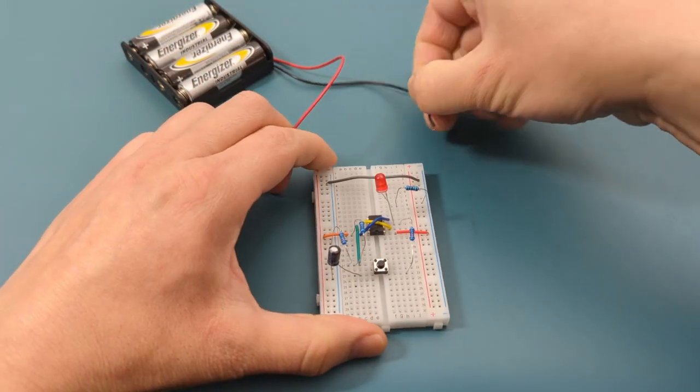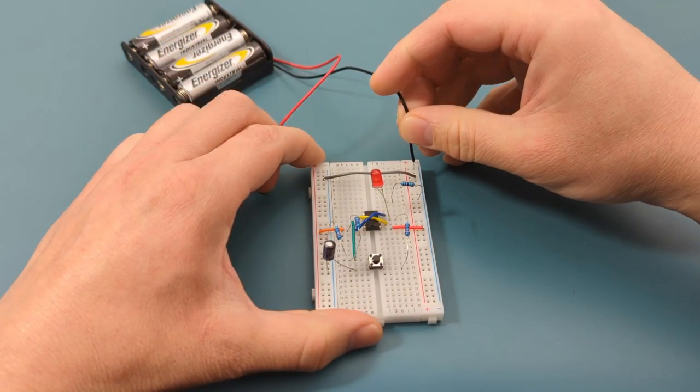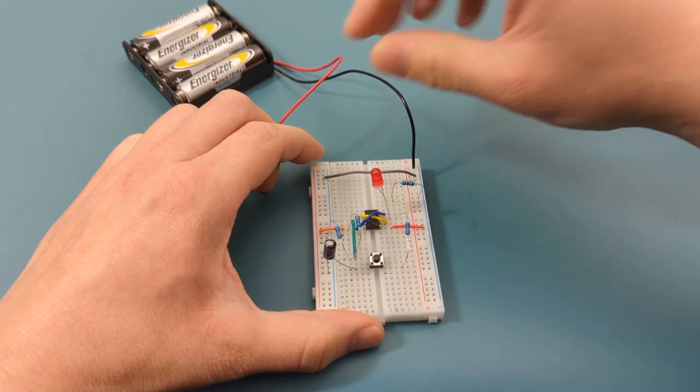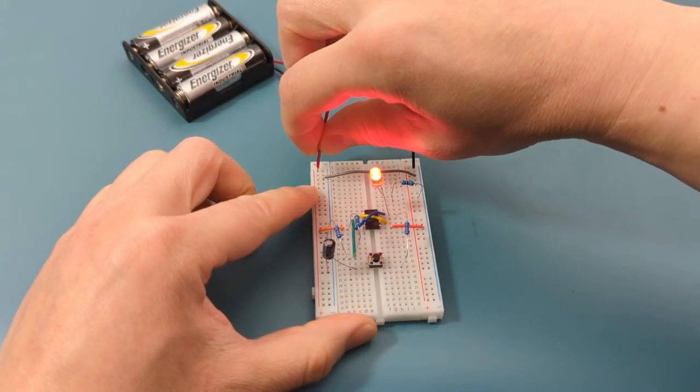It's time to connect the power supply. Connect the negative lead of the battery holder to the negative rail. Connect the positive lead of the battery holder to the positive rail.